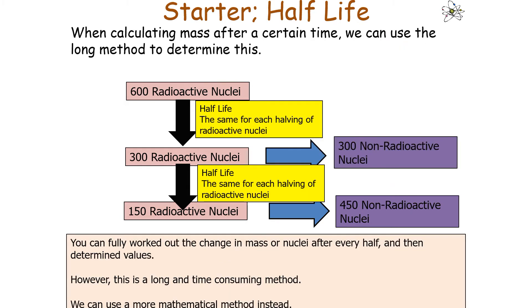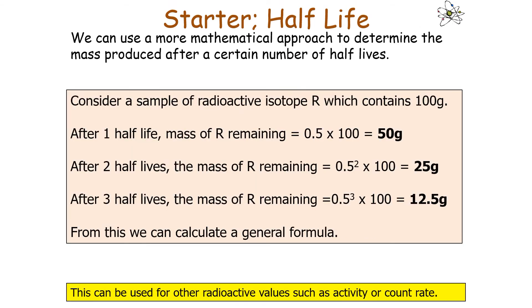When calculating the mass after a certain time, you can use a long step-by-step methodology — working out the change in mass or number of nuclei after every half-life — but this is a long and time-consuming method. There is actually a mathematical shortcut using a more mathematical approach to determine the mass produced after a certain number of half-lives.